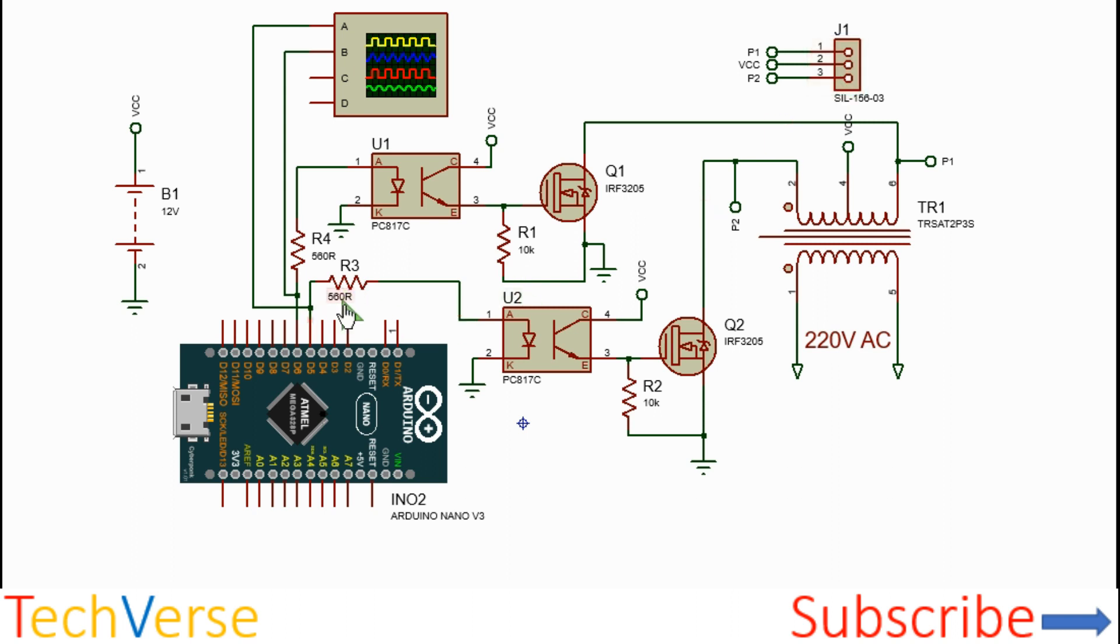So we're using the Arduino digital pins D5 and D6 to drive the MOSFETs. So what happens is, let's say D5 is on. Current will flow through R3 and through the internal infrared LED of the optocoupler U2. This will cause the internal transistor to conduct, and this will basically connect the VCC, which is 12 volts in this case, to the gate of the MOSFET Q2, and it will conduct.